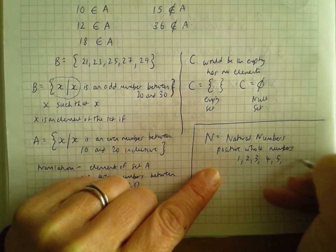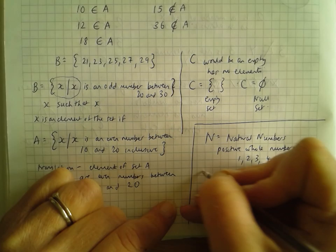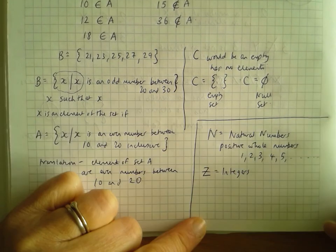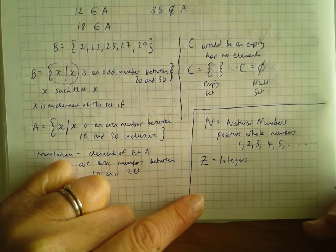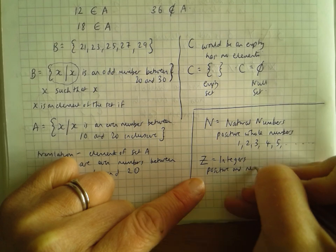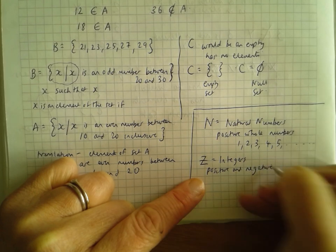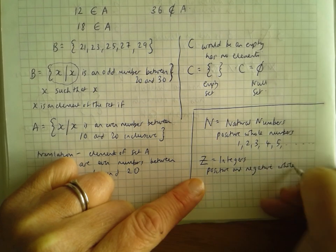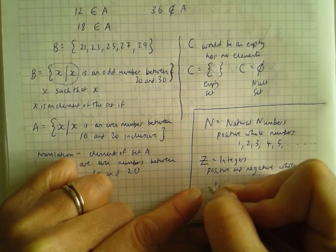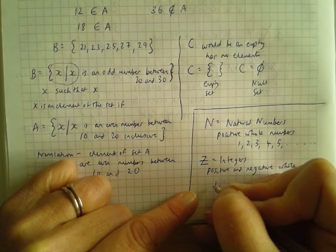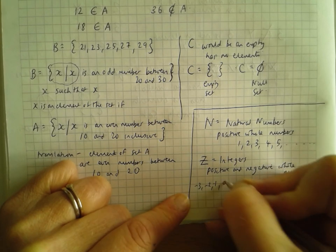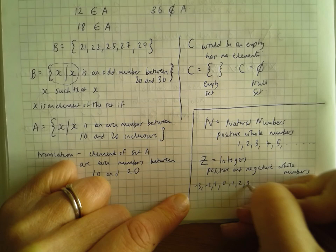Then you've got Z, which weirdly means integers — I think it's to do with some German word. That's positive and negative whole numbers: ...minus three, minus two, minus one, zero, one, two, three... going on infinitely in both directions.